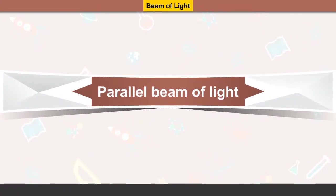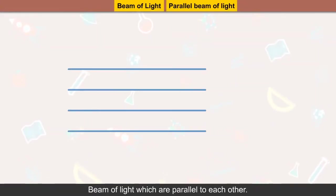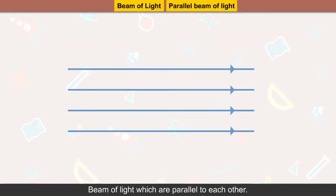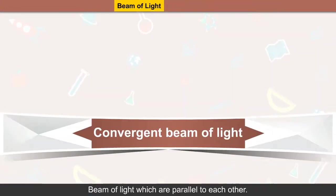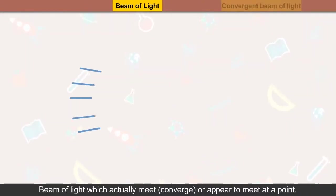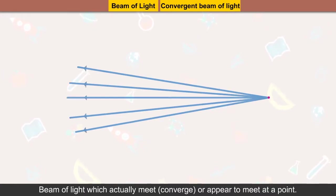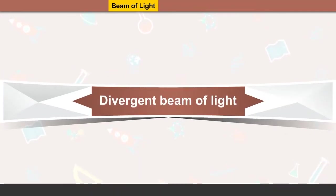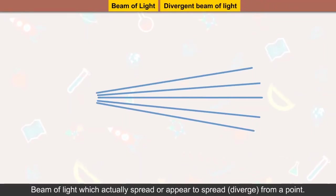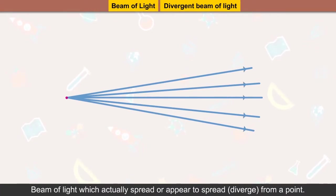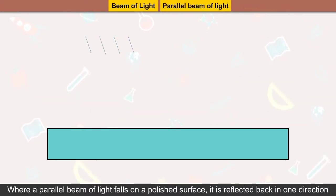Parallel beam of light — beams of light which are parallel to each other. Convergent beam of light — beams of light which actually meet or converge, or appear to meet, at a point. Divergent beam of light — beams of light which actually spread, or appear to spread or diverge, from a point.